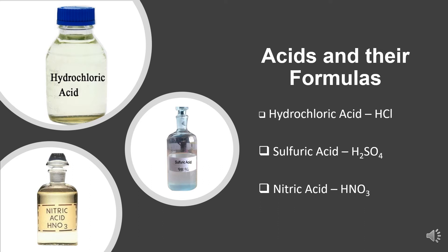Here are three main acids and their chemical formulas. One: Hydrochloric Acid — its chemical formula is HCl. Two: Sulfuric Acid — its chemical formula is H₂SO₄. Three: Nitric Acid — its chemical formula is HNO₃.